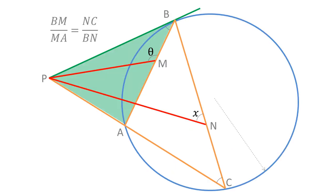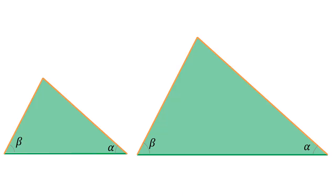Going back to the problem: because B is the point of tangency, if the measure of the semi-inscribed angle at B is alpha, then the measure of the inscribed angle BCA is also alpha. We don't know the measure of angle APB, but let's call it beta. Triangle PAB has two interior angles with measures alpha and beta, which are also the measures of two interior angles of triangle PBC. Can we deduce something from that? If one triangle has two interior angles whose measures match two interior angles of another triangle, then both triangles have the same shape and are called similar triangles.